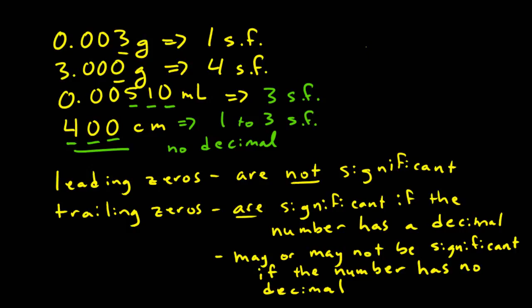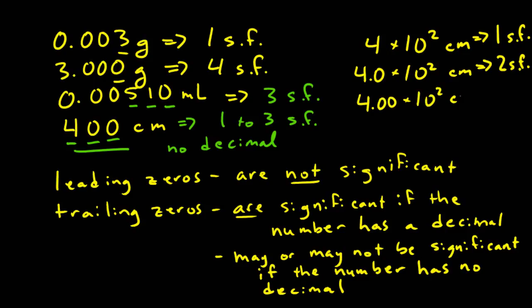In order to clarify the number of significant figures in numbers with trailing zeros that have no decimal, we usually write them in scientific notation. So if we wrote 400 as 4 times 10 to the second, this would have one significant figure. If we wrote it as 4.0 times 10 to the second, we would have two significant figures. And if we wrote it as 4.00 times 10 to the second, we would have three significant figures.